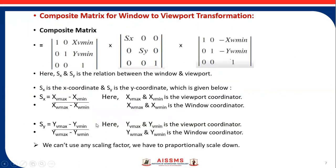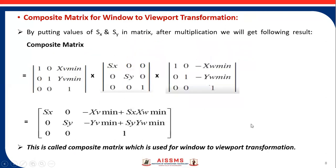This composite matrix is obtained by multiplying the translation matrix, scaling matrix, and again the translation matrix together. Sx and Sy represent the relationship between the window and viewport. The formula for Sx is: Sx = (xvmax − xvmin) / (xwmax − xwmin), where xvmax and xwmax, xwmin are the viewport and world coordinate window coordinates respectively. Similarly, Sy = (yvmax − yvmin) / (ywmax − ywmin). We must proportionally scale it, and by multiplying all these matrices we get the composite matrix used for window to viewport transformation.